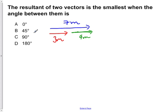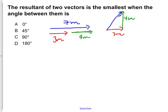If we laid it at a 90 degree angle, so we have 3 meters down here and we have 4 meters, our resultant would be 5 meters. So here we can see that we have a smaller resultant vector at 90 degrees.